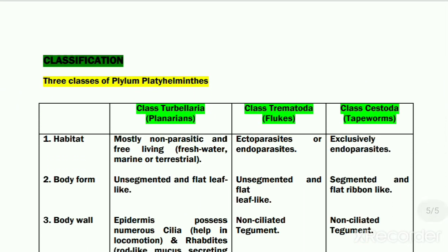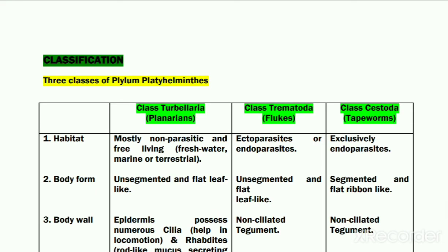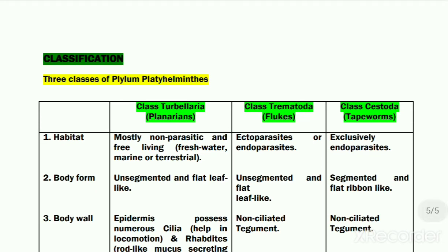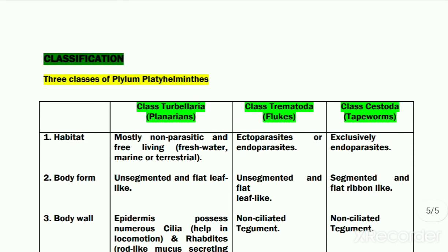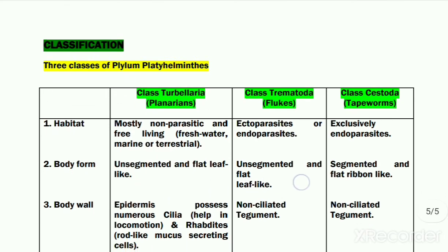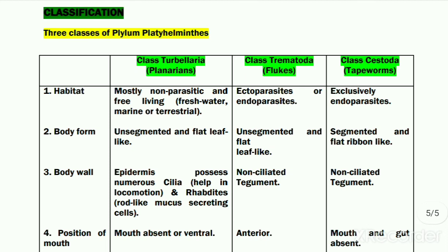Now comes the classification of the phylum Platyhelminthes. It is divided into three classes: class Turbellaria, whose organisms are generally referred to as planarians; class Trematoda, which are generally called flukes; and class Cestoda, whose organisms are termed tapeworms. Here are the important features of all three classes in comparative tabulated form.